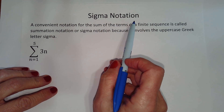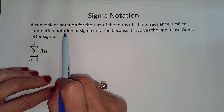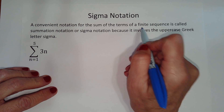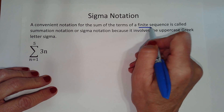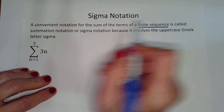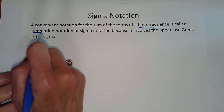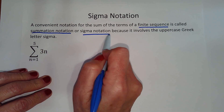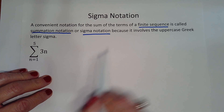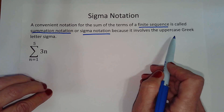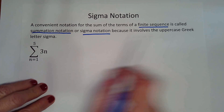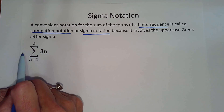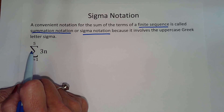Sigma notation. A convenient notation for the sum of the terms of a finite sequence is called summation notation or sigma notation. It involves the uppercase Greek letter sigma. Sigma tells us to add.